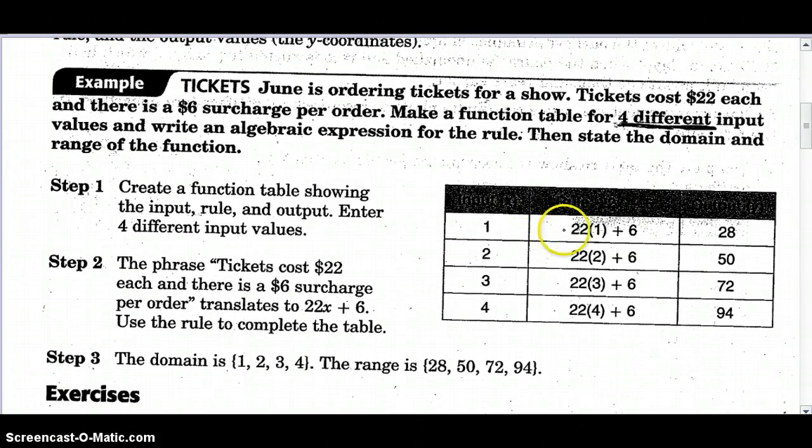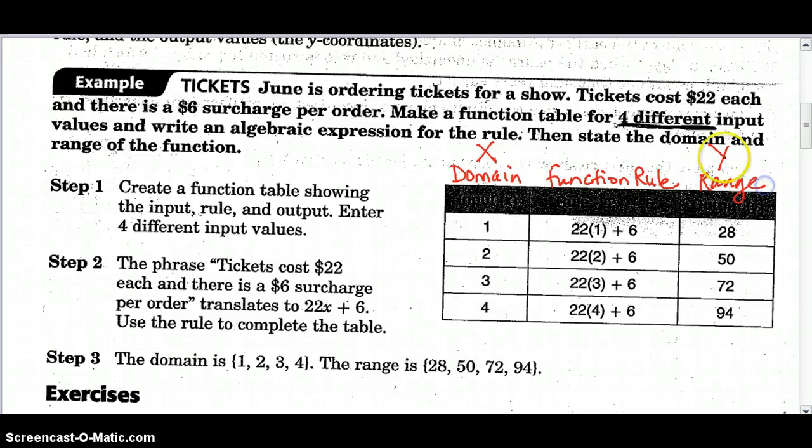Here is a chart. Here you can't see very well, but this is the domain or the x values. This is the function rule, in case your paper looks really dark too. That's what operation has taken place to the x to put out your y value, also known as your range. All your y values are your range.